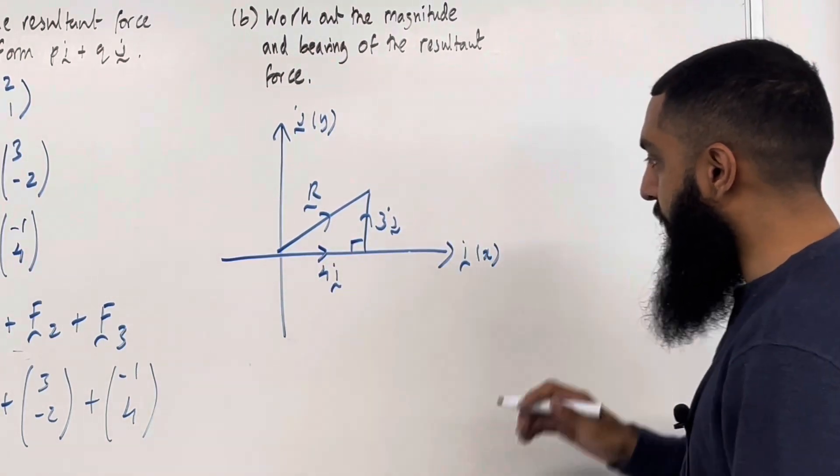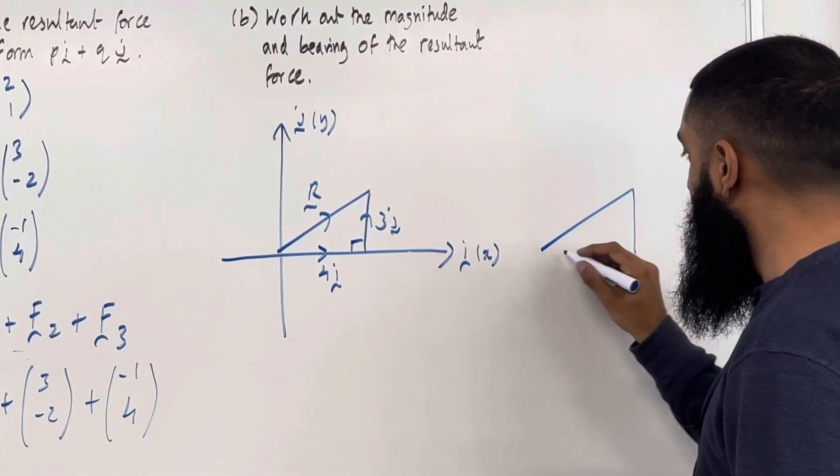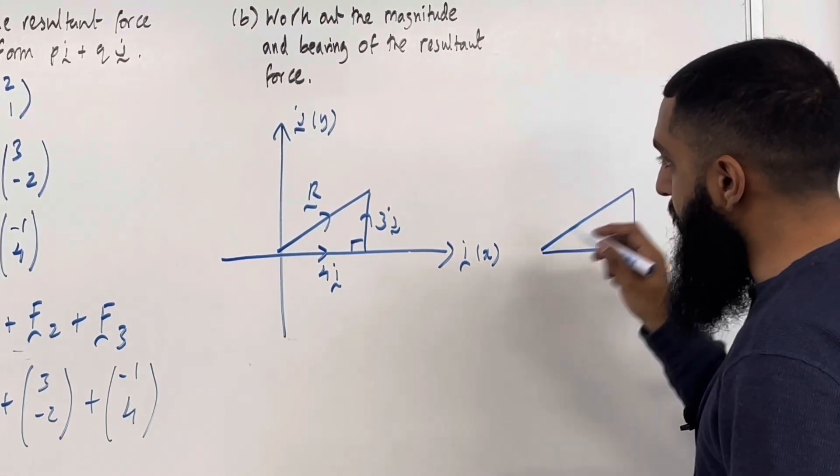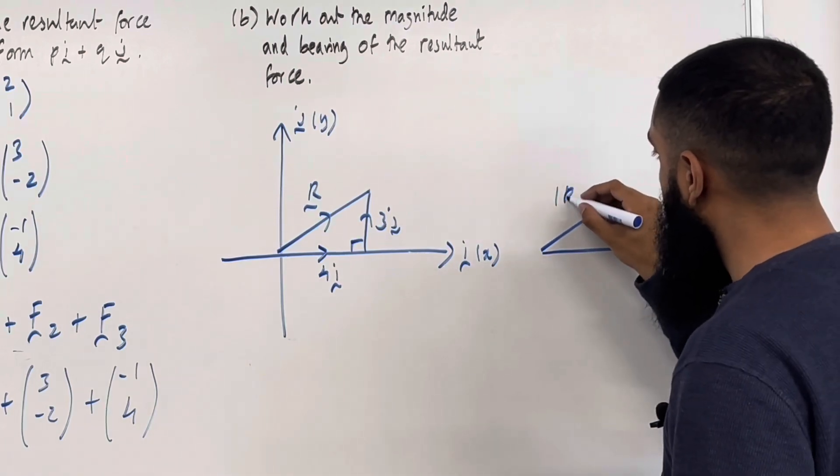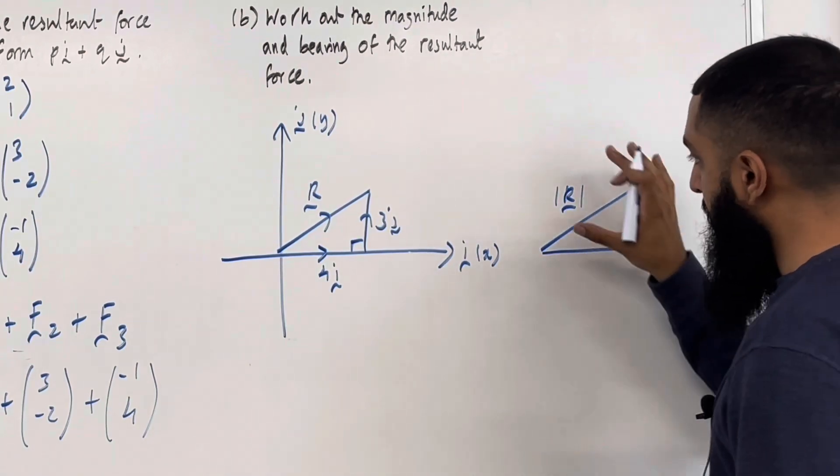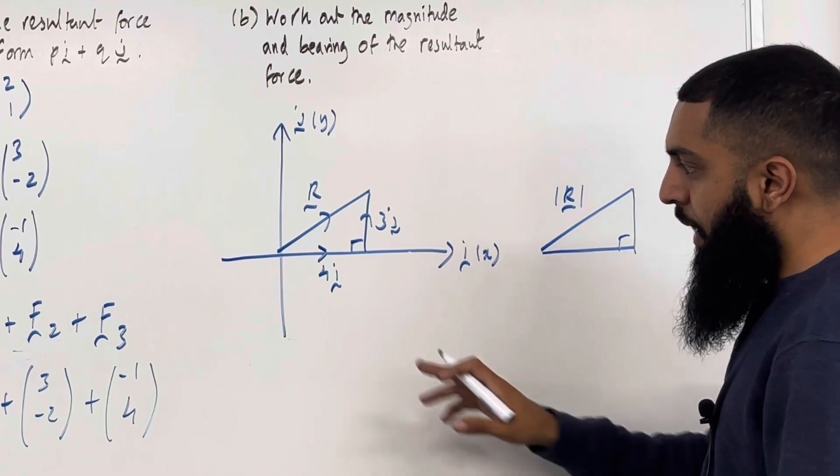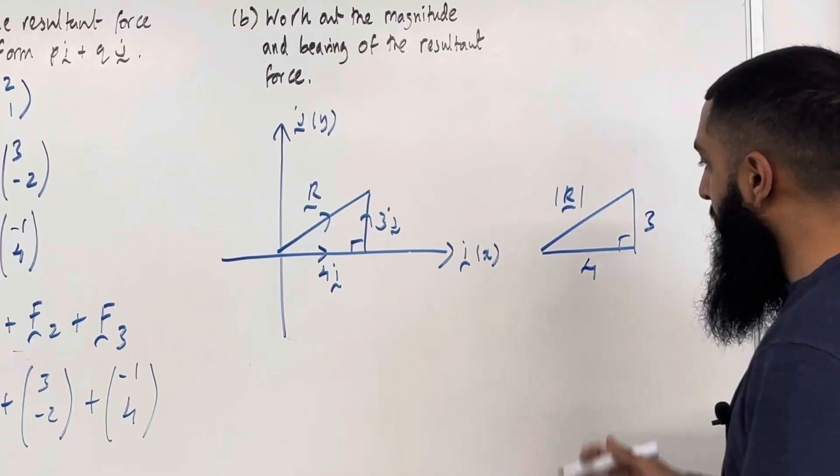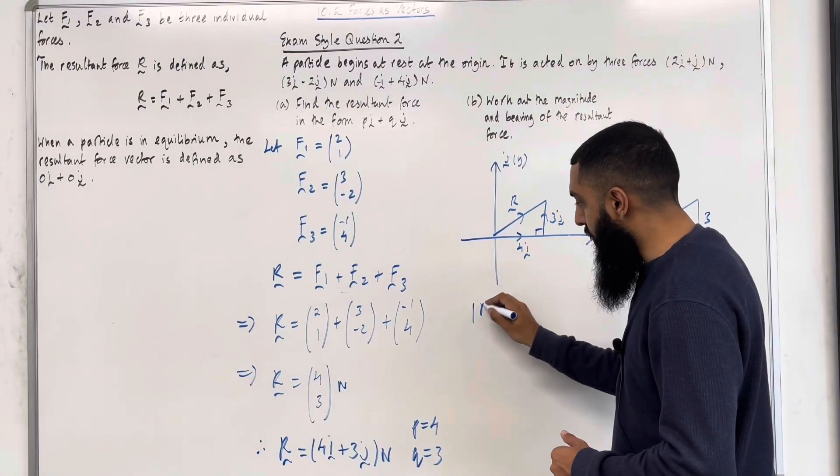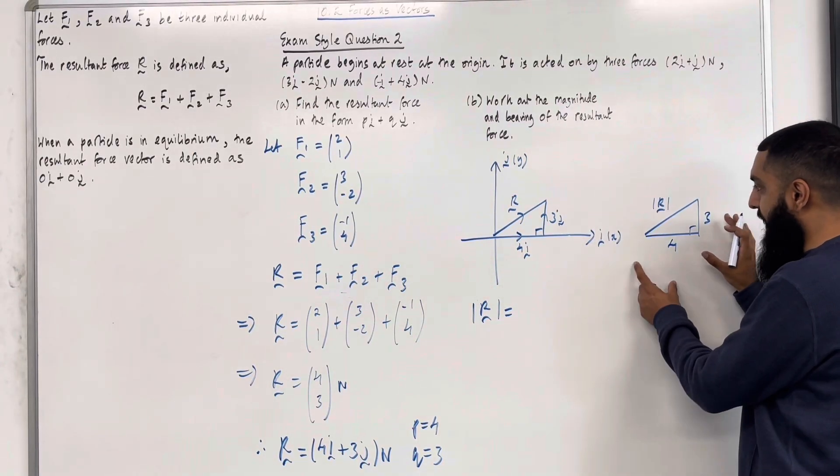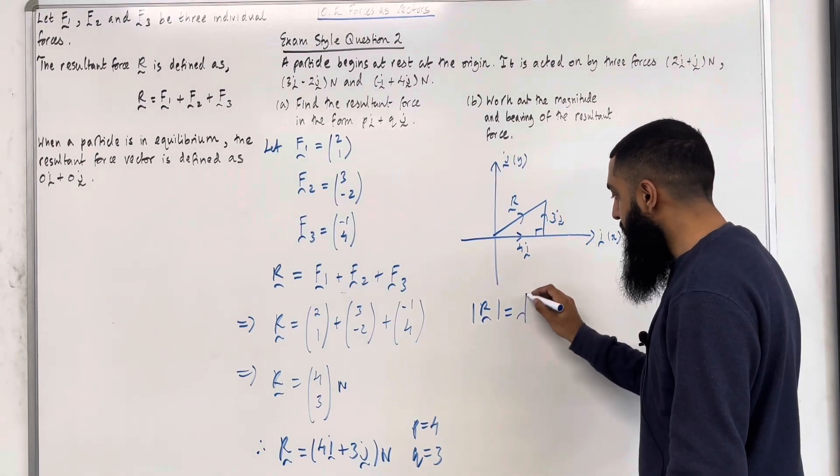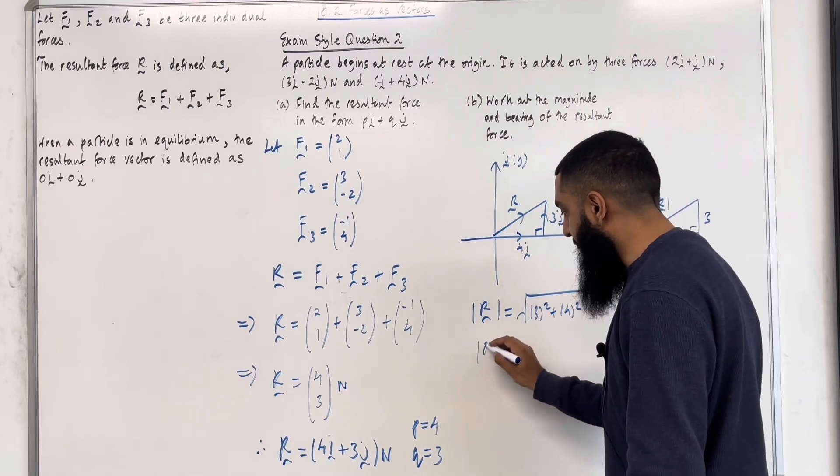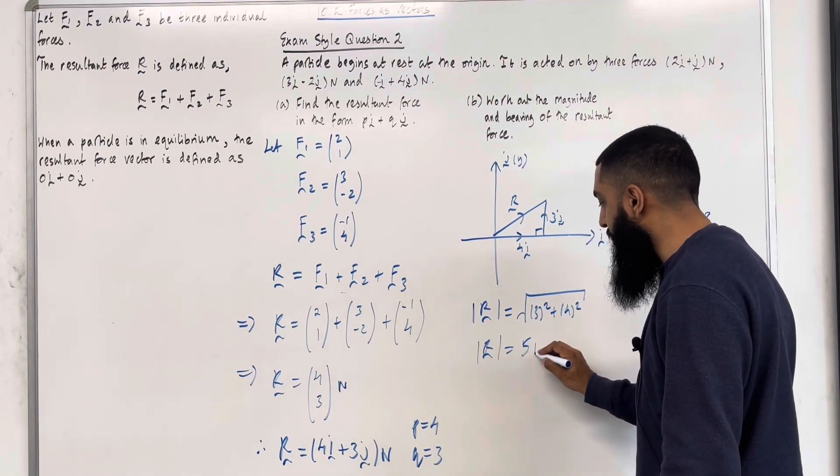So, I want to work out the magnitude of the resultant force denoted by this notation here. That's what I'm after. 4I, the length is 4. 3J, the length is 3. Now, to work out the magnitude of the resultant force, I can simply use Pythagoras' theorem. So, square root, 3 squared plus 4 squared. Hence, the magnitude of R is equal to 5 Newtons.